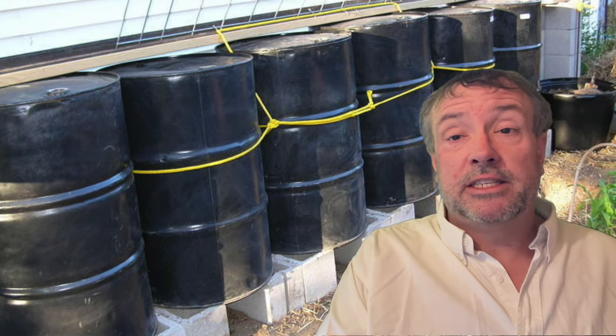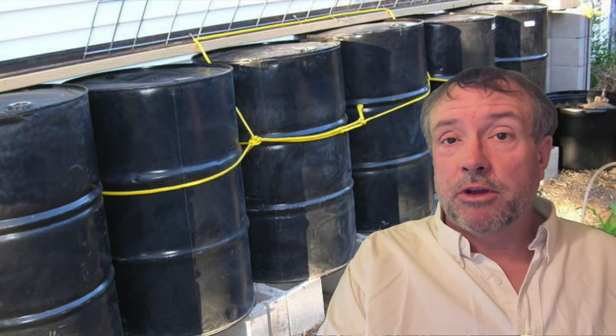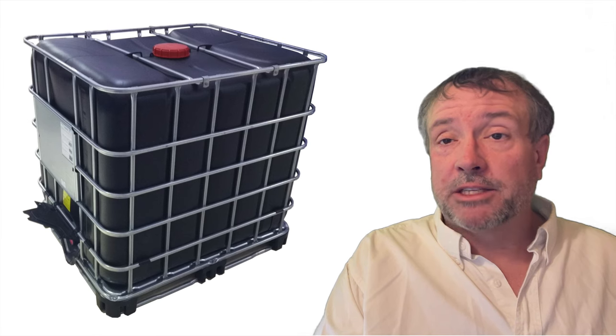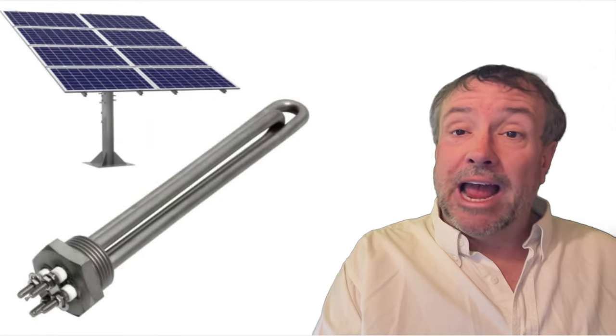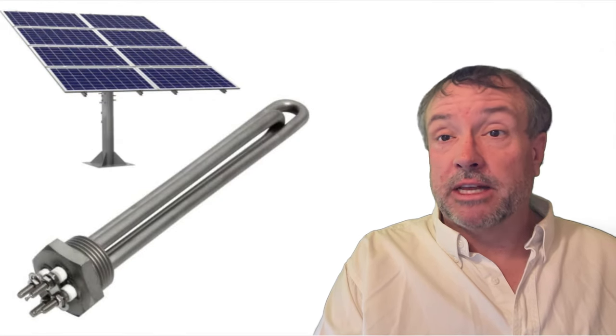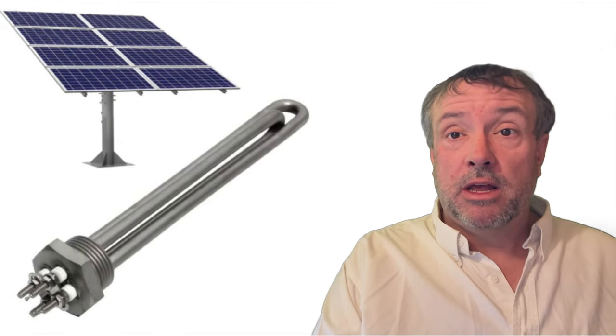The solution to heat an existing greenhouse without digging up your yard is to add a thermal mass with IBC totes on the north wall painted black to absorb the sun's thermal energy and heated by a hot water tank element that's powered by a solar panel positioned outside.